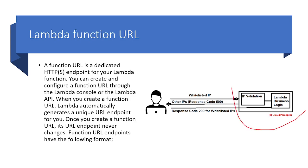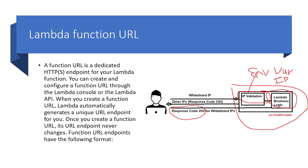This is our Lambda function which contains the IP validation logic. It picks up the IP address that the user is requesting and checks it against an environmental variable called IP. We'll have an environmental variable set up in the Lambda with the whitelisted IP address. If the user's IP address matches the Lambda environmental variable IP, it will execute the business logic and return response code 200. If it does not match, it will return response code 500.